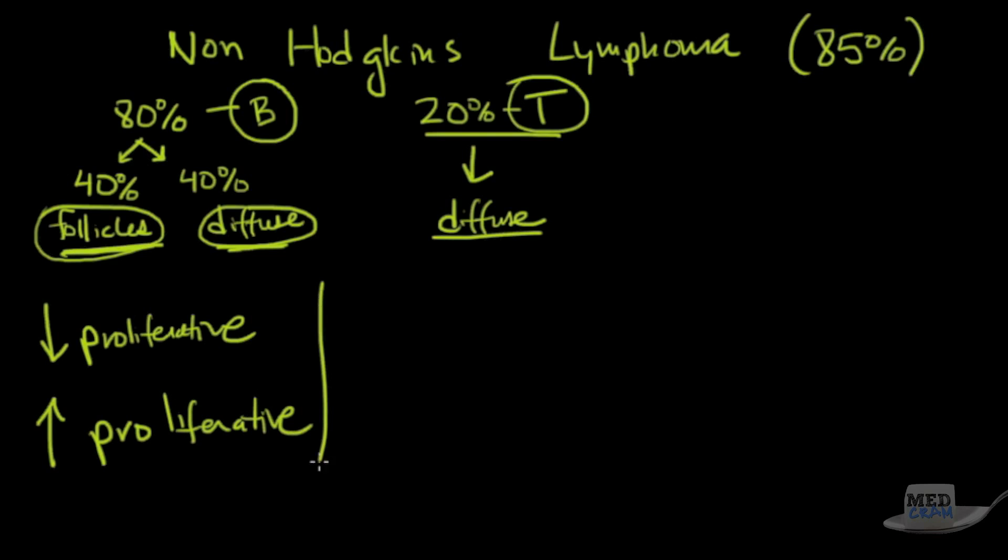So the things that you have to look at are whether or not they're cleaved. So a cleaved means that you've got a cell and they've got like a little thing in it. They're not smooth, they've got a little cleave there, kind of where they get the term cleavage from. But a little bit of a cleave, something is dividing it. More proliferative would be non-cleaved.